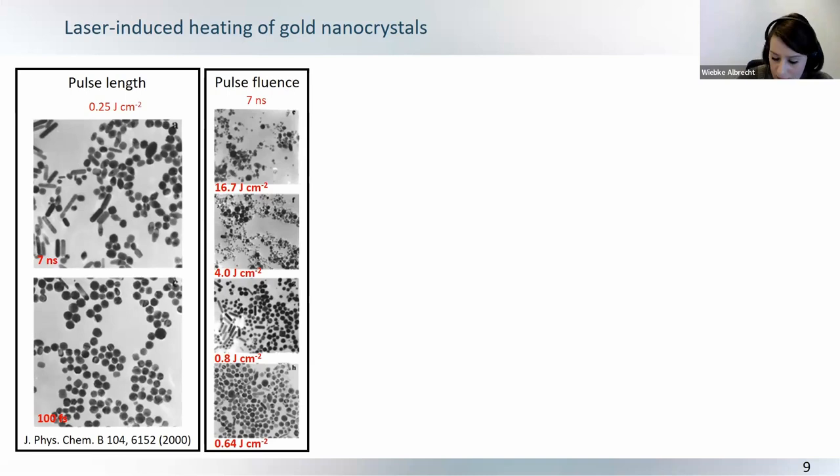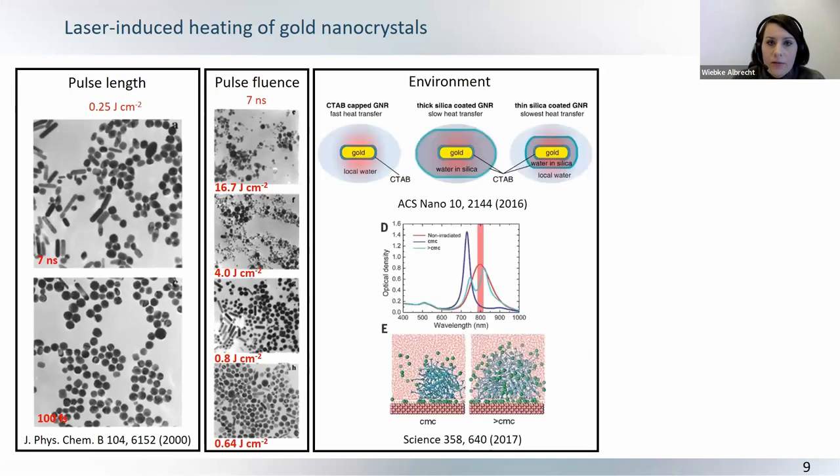And in the last years, some people have looked at the influence of the environment, and this is very important, because it completely determines your heat dissipation properties. And what might have been neglected a bit in colloidal systems is the ligand layer that you have on top of your colloidal system. And it was seen that this can lead to an additional interface resistance and really influences your heat dissipation properties.